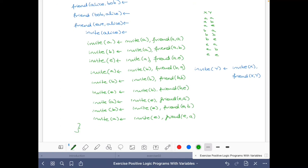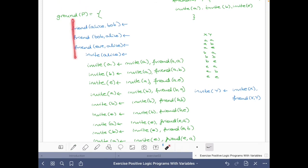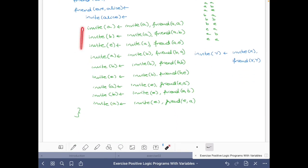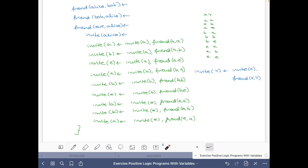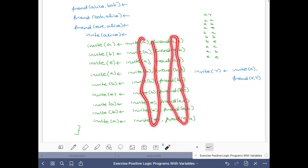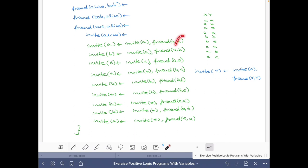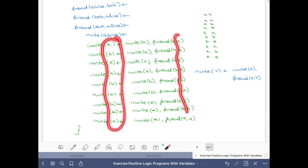So this is the ground instantiation of the program. Again, we have the facts here and then we have replaced the rule with variables with all the possible combinations of X and Y. So let me just check we have the invites. So we have the X here, the X's which are also these ones, they should be the same. And then you have the Y's which are here, that should be the same as these ones.